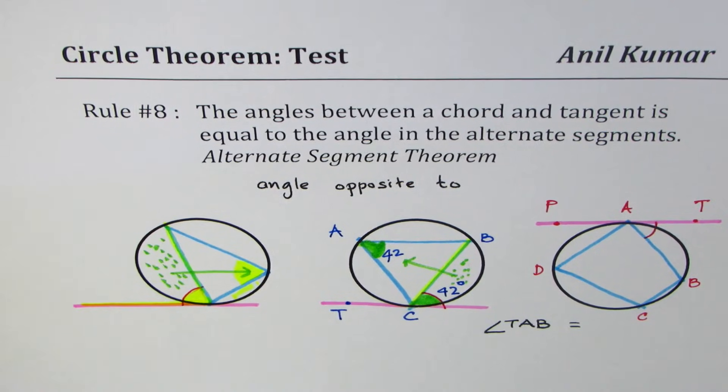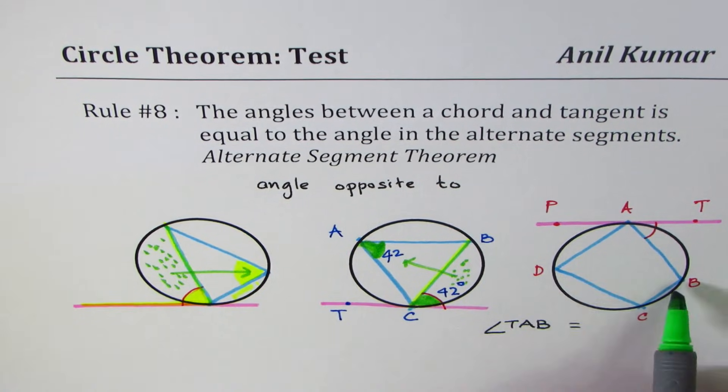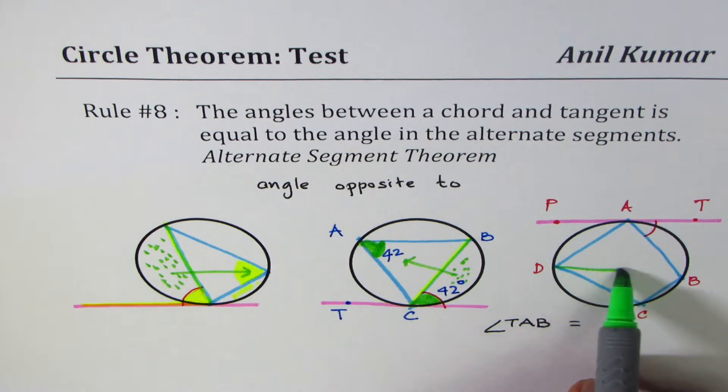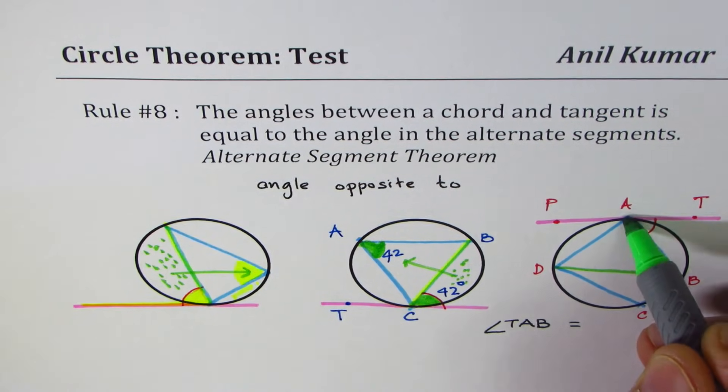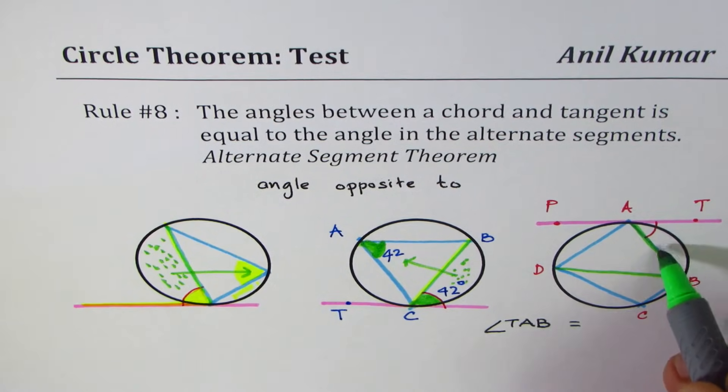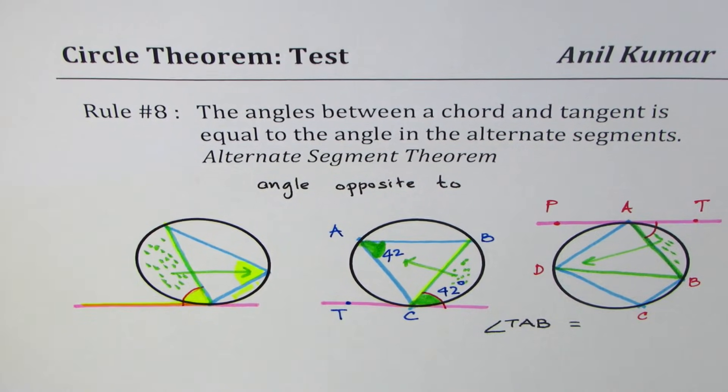Now it is important to understand that for getting the alternate angle theorem as an application, we have to make a triangle. So let's join this to make a triangle. The segment formed by the chord and the tangent is this one.